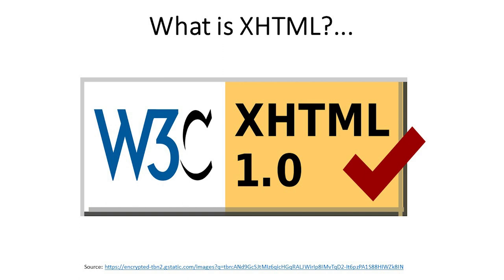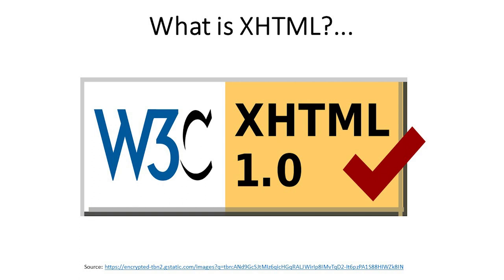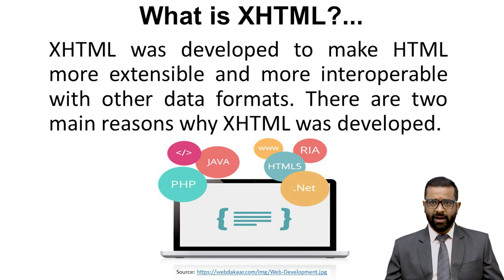XHTML was developed to make HTML more extensible and more interoperable with other data formats. These are the two main reasons why XHTML was developed. The W3C consortium recommended XHTML 1.0 on January 26, 2000, and XHTML 1.1 became the W3C recommendation on May 31, 2001.